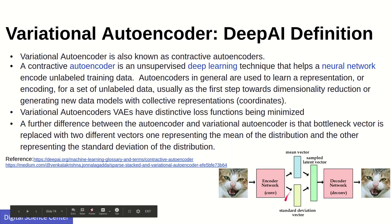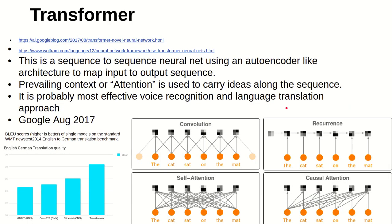A variational autoencoder is another type of autoencoder that also performs unsupervised learning. The main difference is that it uses a mean vector and standard deviation vector between the encoder and decoder. This is the core distinction between a standard autoencoder and a variational autoencoder.